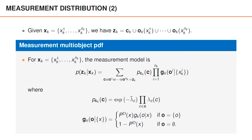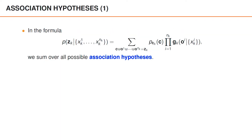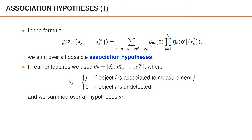This is interesting and useful if you want to consider other model assumptions. For the standard assumptions considered here, Carl presented a complete measurement model in the videos on tracking n objects and clutter. Since the underlying model assumptions have not changed, we expect the models to be the same, but we need to express our model on a different form to see the relation. Our expression contains a summation over all possible association hypotheses. Earlier in this course, we used the vector theta k to denote our hypotheses, where element i in theta k describes the association hypothesis for object i and takes the value zero if object i is undetected, and the value j if measurement j comes from object i.